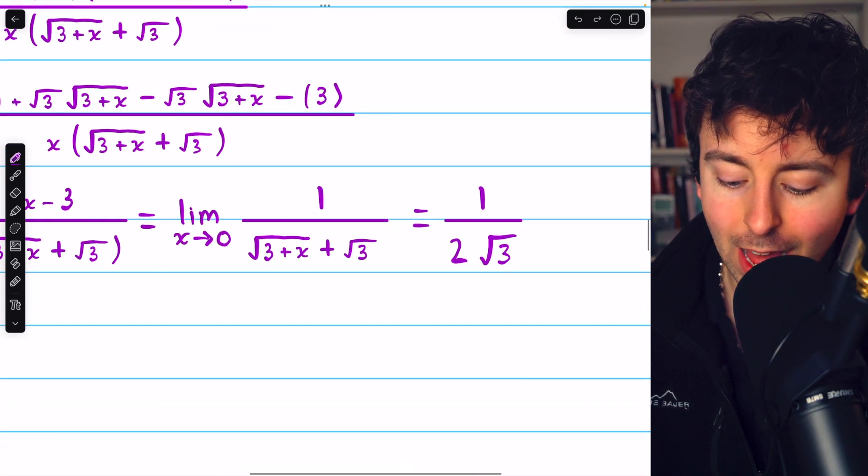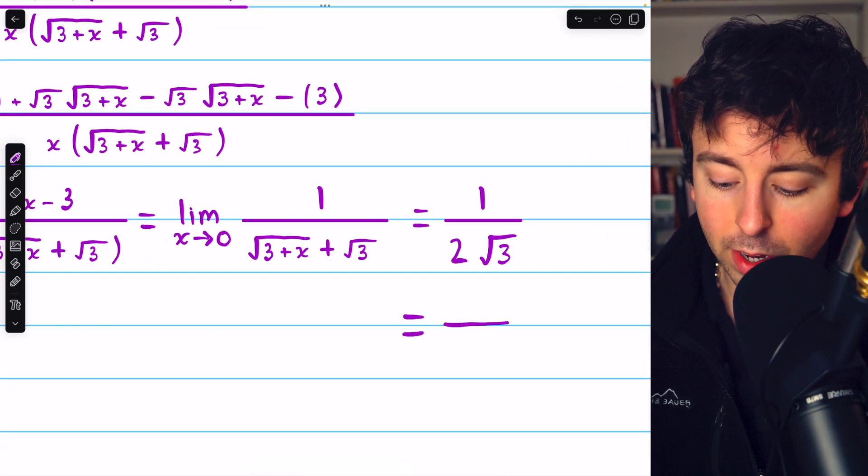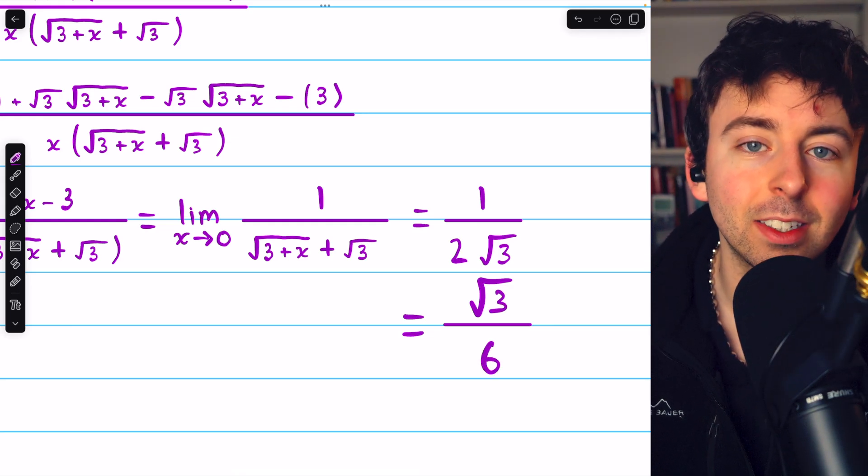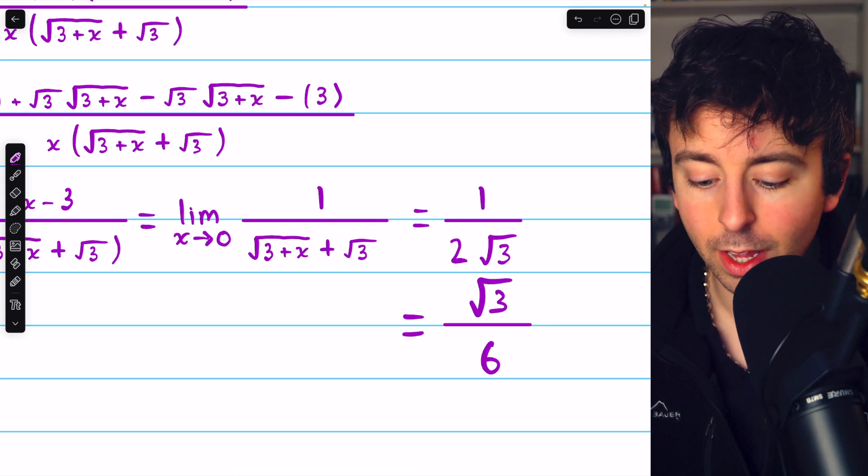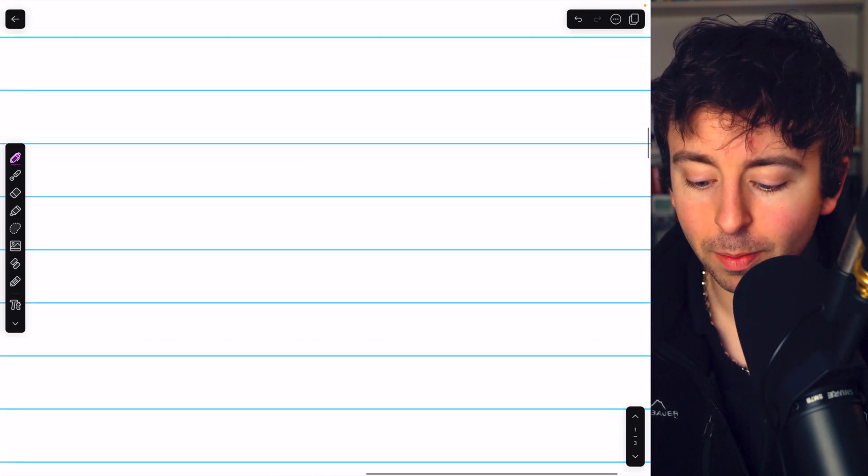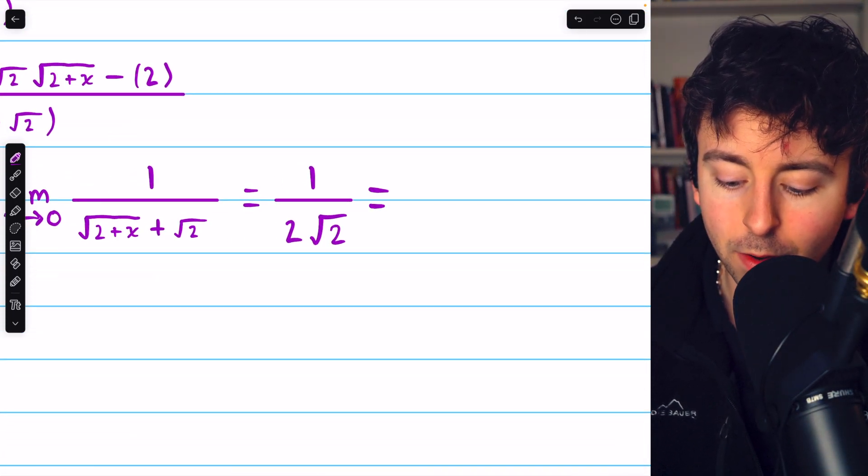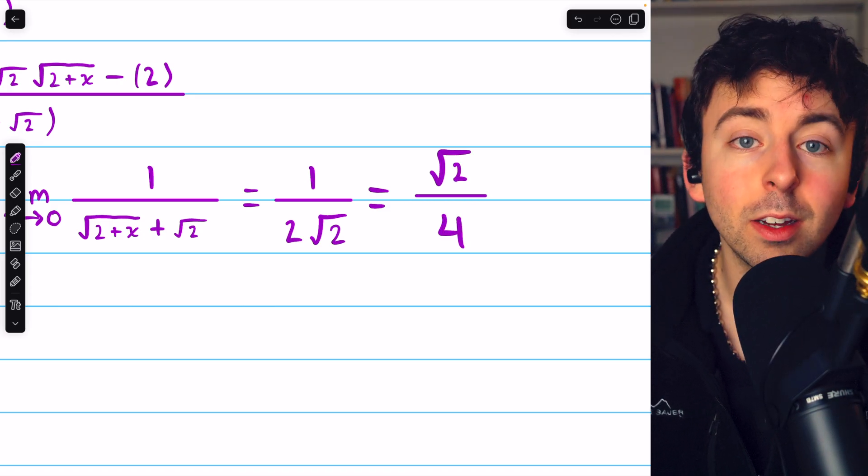And if you're into rationalizing the denominator, we could finish writing this as √3/6 by just multiplying the top and bottom by √3. And coming back to the previous problem, if you want to rationalize the denominator, multiply the top and bottom by √2, and you're going to have √2/4.